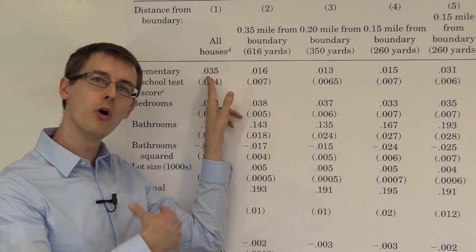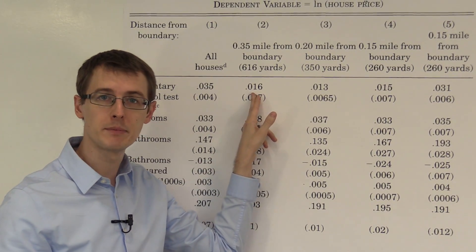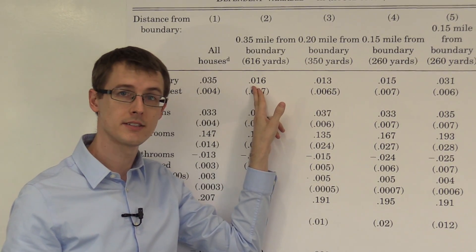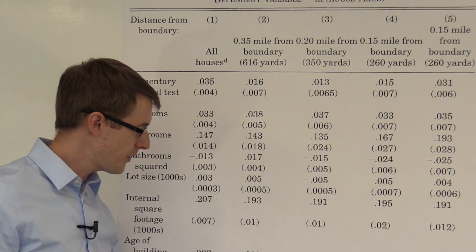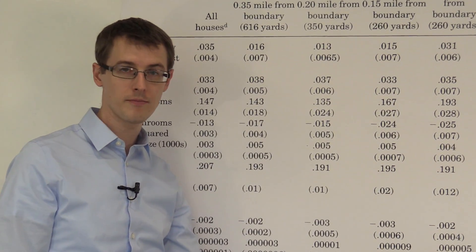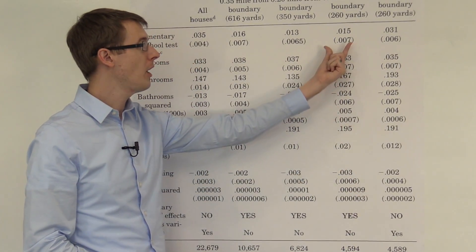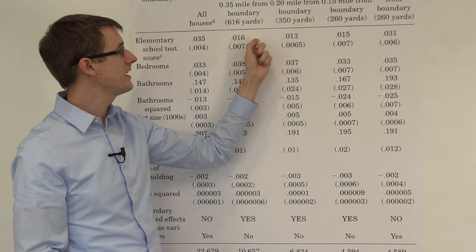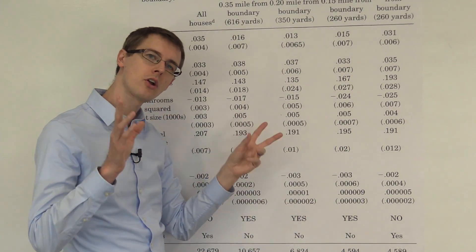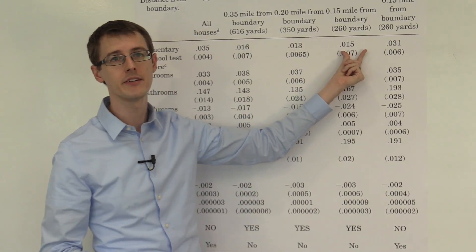Now if we look at just houses close to the boundary, we see that this overall regression that includes all the houses, the effect drops almost in half from 0.035 down to 0.016. And that's if we have about 10,000. If we go closer to the boundary, our sample size gets smaller and even smaller if we go even closer. Okay? But we see that the effect size is basically the same regardless of how far you are from the boundary as long as you're close in some sense. 0.016, 0.013, and 0.015.